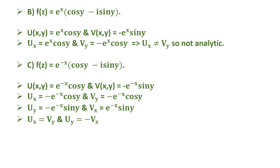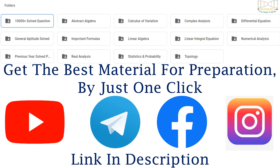Here ux equals vy and uy equals minus vx, so the Cauchy-Riemann equations are satisfied. The function is analytic and hence the correct answer is option c. Thank you, and get the best material for preparation with just one click — the link is given below in the description.